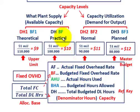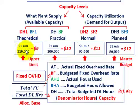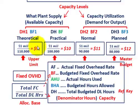We really have four different alternatives when you're trying to select how to allocate your fixed overhead amongst the products: theoretical, practical, normal, or planned (master budgeted) amount. In this example, let's say total fixed overhead for our plant operation is one million dollars. Starting with the theoretical amount — in theory we can produce at 110,000 direct labor hours. Dividing that into one million dollars gives a fixed overhead rate of nine dollars per direct labor hour.